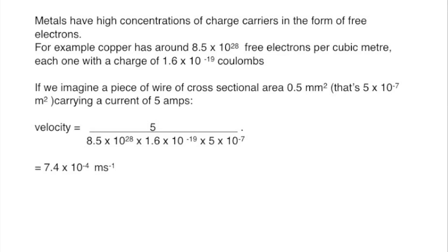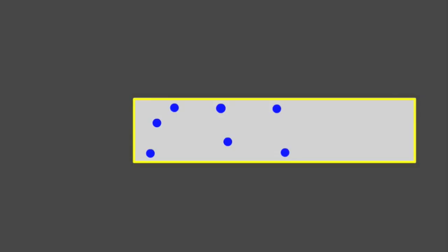Copper is particularly rich in free electrons. The number of charge carriers in, for example, a semiconductor is far fewer, perhaps one millionth. Therefore, to carry a significant current, the drift velocity has to be a lot higher.